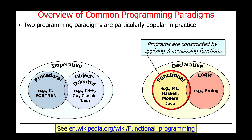Modern Java has elements of functional programming as well. Modern Java refers to versions of Java starting with Java 8, which was released in 2014, up to the present day.